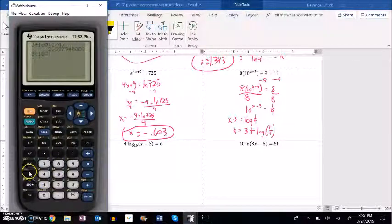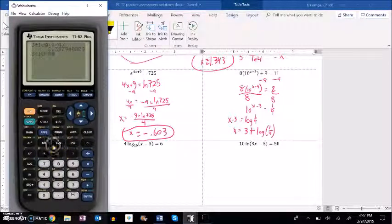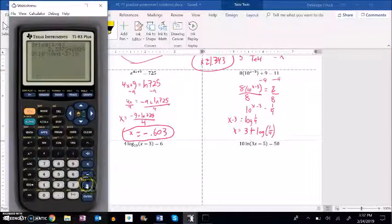So 8 times 10 to the power of x minus 3, the answer that I got, minus 3. I'm going to close up those parentheses and add the 9 and it should spit out 11. It does.